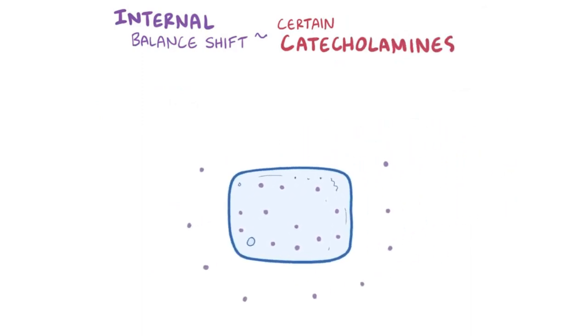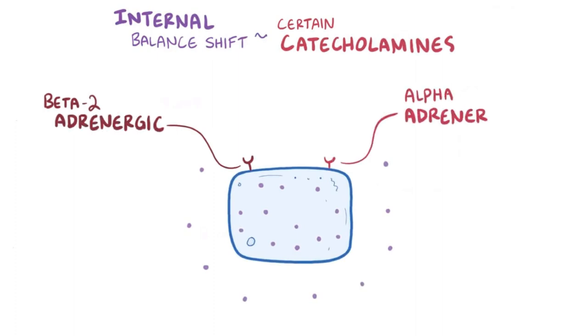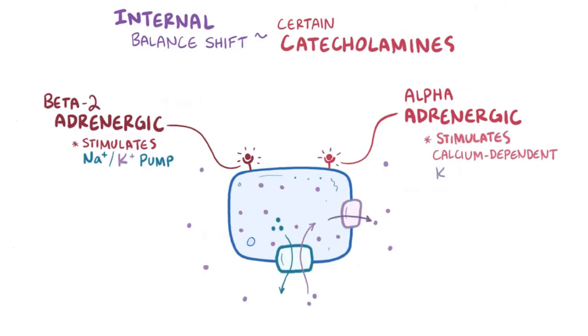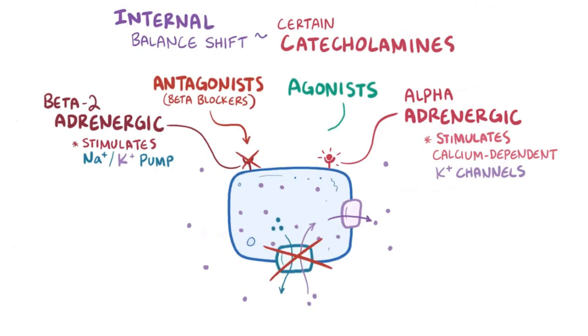Certain catecholamines can also shift potassium out of cells, and this is via beta-2 adrenergic and alpha-adrenergic receptors on cell membranes. When activated, beta-2 adrenergic receptors stimulate the sodium-potassium pump, which pulls potassium from the blood into cells. Meanwhile, alpha-adrenergic receptors cause a shift of potassium out of cells via calcium-dependent potassium channels. So that said, beta-2 adrenergic antagonists, also known as beta-blockers, and alpha-adrenergic agonists both cause a shift in potassium out of the cells and into the blood.